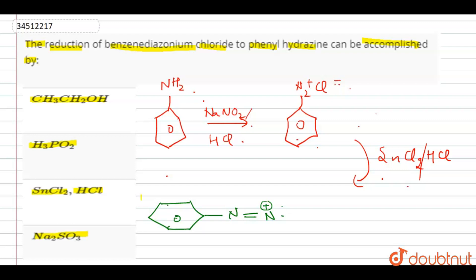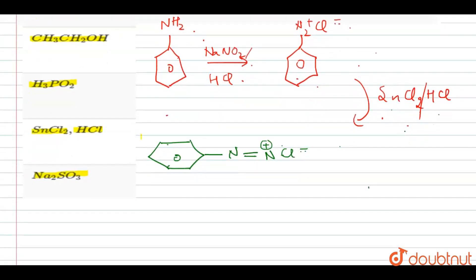Now what happens is, as this is a good reducing agent, it takes out this chlorine and transforms this reaction by abstracting chlorine from this reaction.